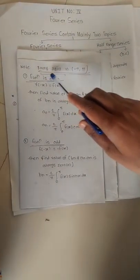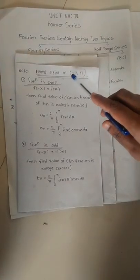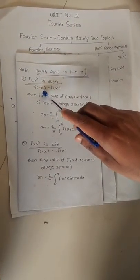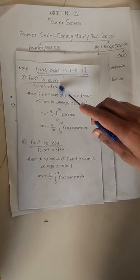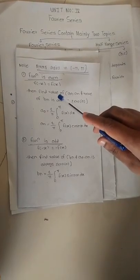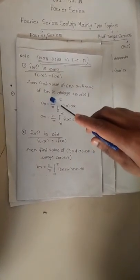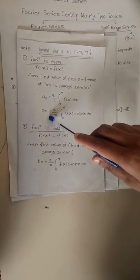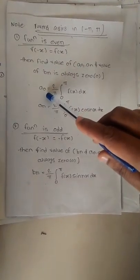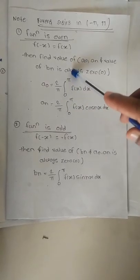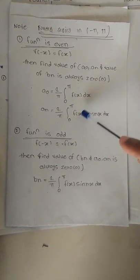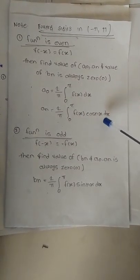For a Fourier series in the range minus pi to pi, we require even function and odd function concepts. The function is said to be even if f of minus x is equal to f of x. If any function is an even function, we require only the values of a naught and aₙ — these are the Fourier coefficients. The value of a naught is 2 by pi, integral 0 to pi of f(x) dx, and the value of aₙ is 2 by pi, integral 0 to pi of f(x) cos(nx) dx.